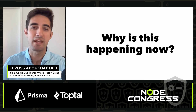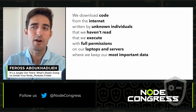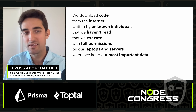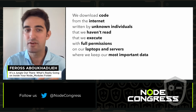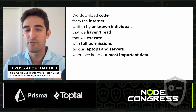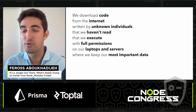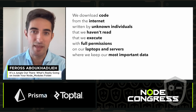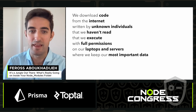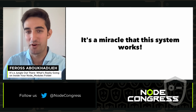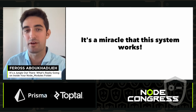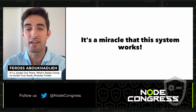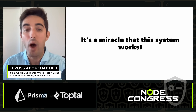So why is this happening now? What we're trying to do is kind of crazy — we're downloading code from the internet written by unknown individuals that we haven't read, and we execute it with full permissions on our laptops and servers where we keep our most important data. This is what we're doing every day when we run npm install. I personally think it's a miracle this system has worked for this long — it's a testament to how good most people are. But unfortunately, not everyone is good.